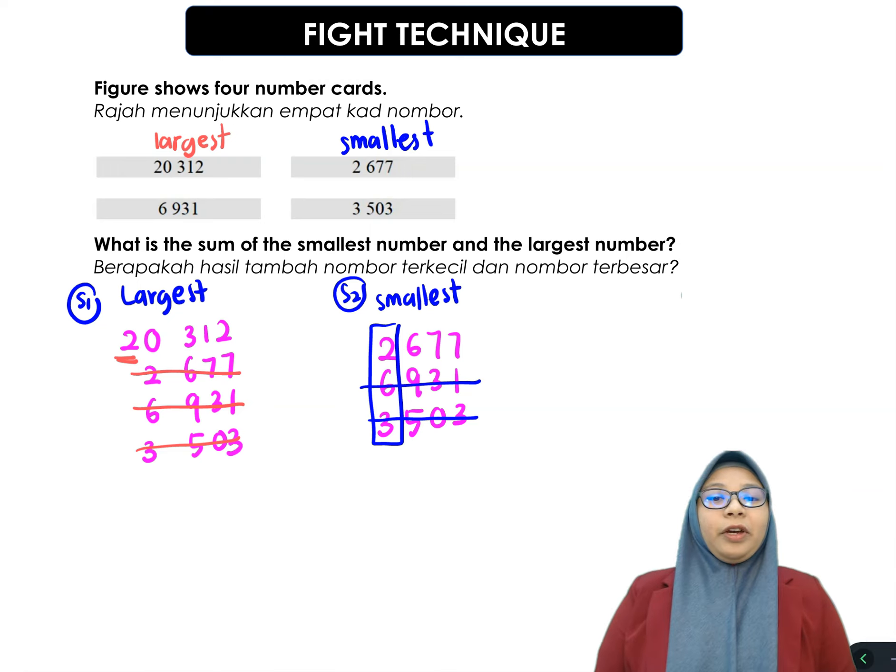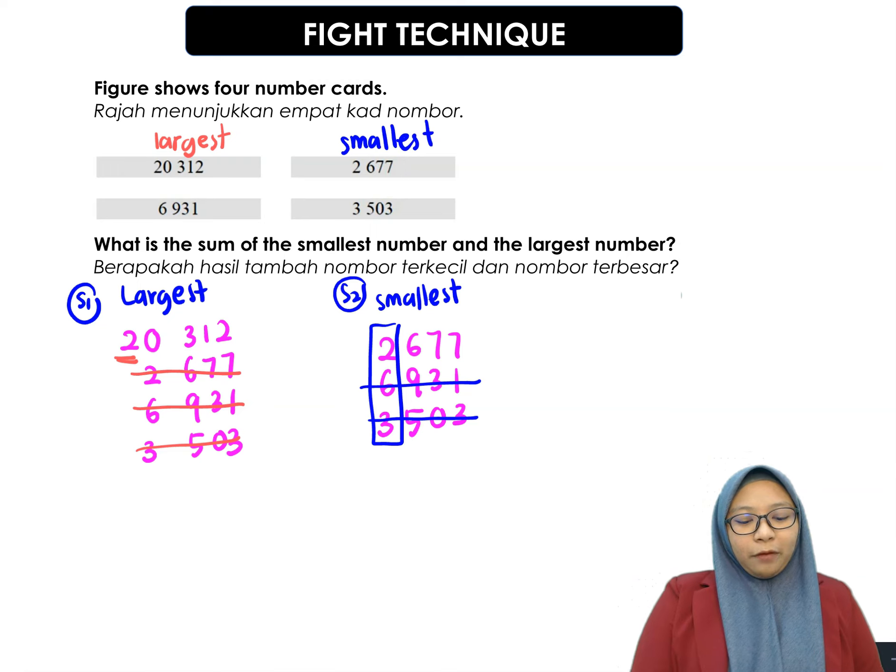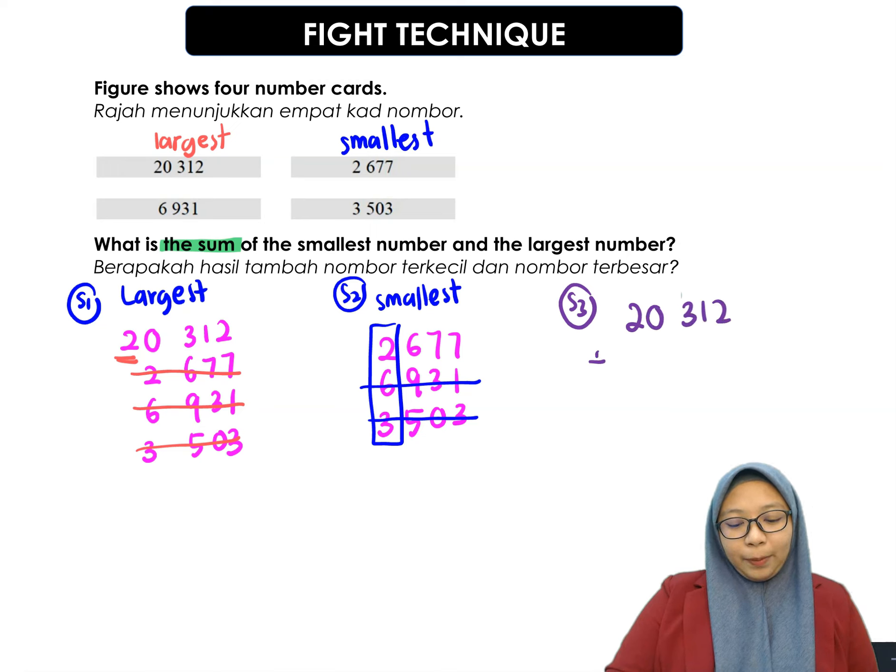So, after we find out which one has the smallest number and the largest number, we have to sum because the question asks you the sum. So, we have to add. So, the third step, you have to add largest number, 20,312, plus smallest number, 2,677.